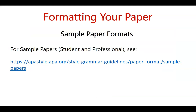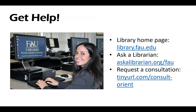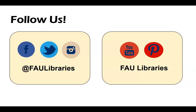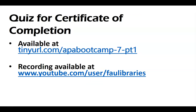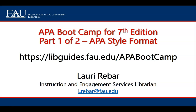If you'd like to see sample papers, those are listed in the APA Bootcamp Lib Guide. To get help, go to the library homepage, use Ask a Librarian, or request a consultation — available in person and online. Follow us on social media. To get your quiz for the certificate of completion, go to tinyurl.com/APA-Bootcamp-hyphen-7-hyphen-pt1. The recording will be available on our YouTube site and at the video and tutorials page on the FAU Libraries website. Thank you for viewing APA Boot Camp for the 7th edition, Part 1 on Formatting.